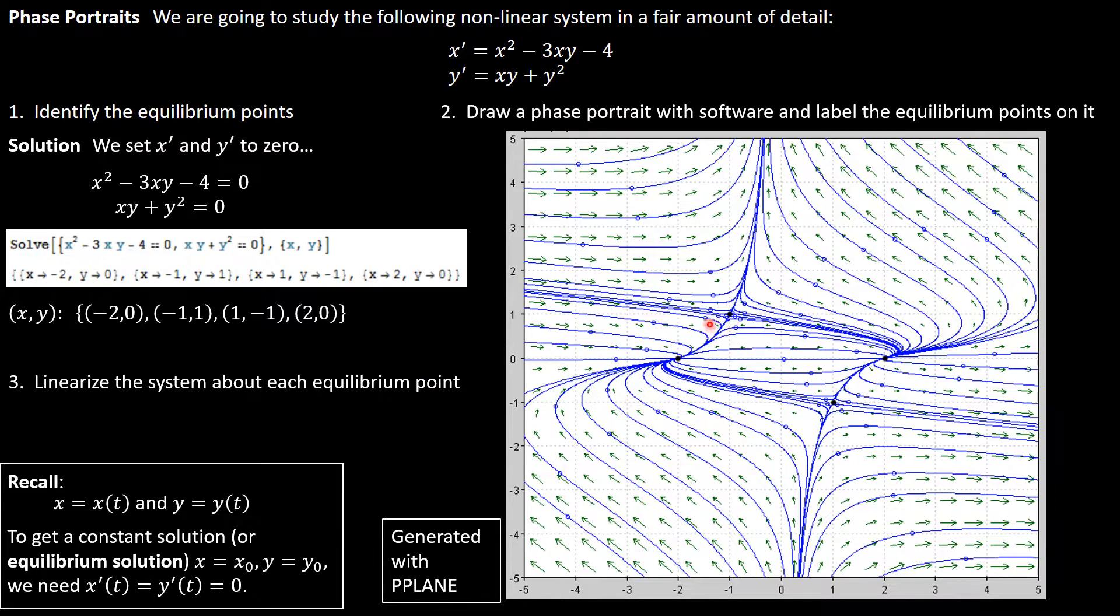The next thing we're going to do is discuss how to figure out what these look like even without using the software, because it's important for you to understand why the picture looks the way it does, or else you're just helplessly relying on your software, which is not a good position for any applied mathematician to be in. To understand this picture we're going to use linearization. In particular we're going to focus on this point negative one one, which I have now drawn a circle around to indicate that we're going to zoom in on that point.